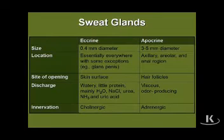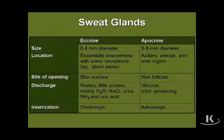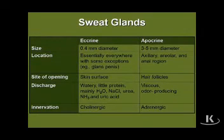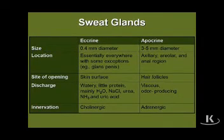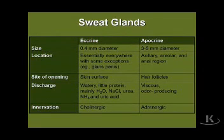Apocrine sweat glands have a much more restricted distribution. They are basically found mainly in the axillary and anal regions. They too, like sebaceous glands, open into the shaft of hair follicles. Their secretory product is much more viscous and odor producing, and they're under adrenergic innervation control.